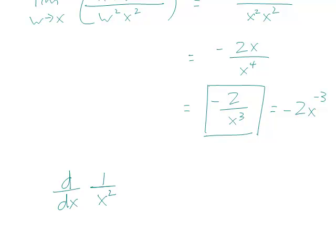So we have the derivative of 1 over x squared is equal to minus 2 over x cubed, or minus 2x to the minus 3.